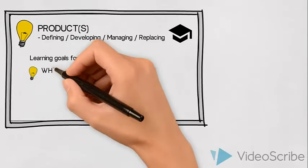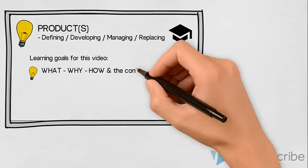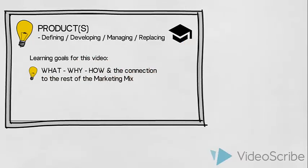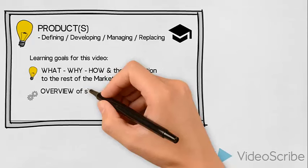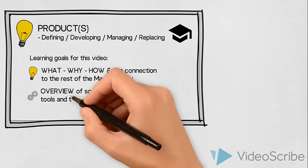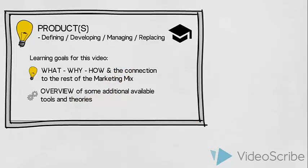The goal is to establish an understanding of what defining a product means, why we need to know about it and how we could go about doing it. We will also look at the connection with the rest of the marketing mix. Secondly, we will provide an overview of some additional tools and theories we as marketers can use when defining, developing, managing or replacing products or services.